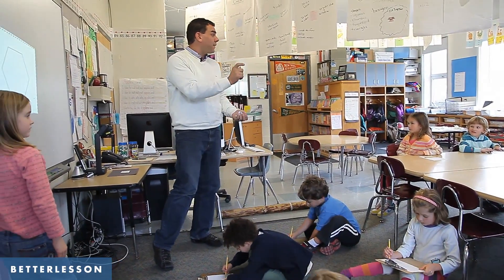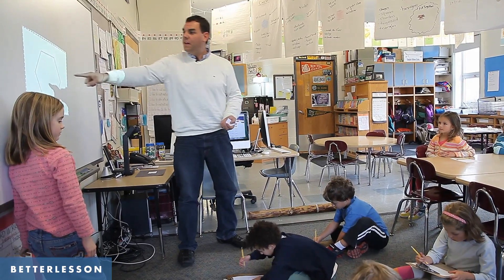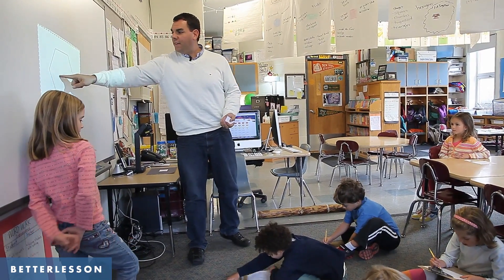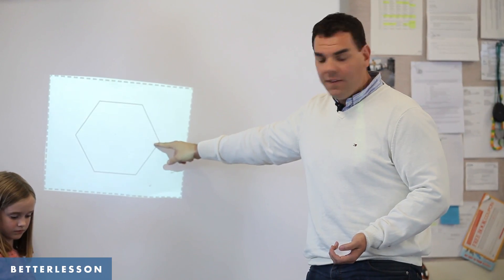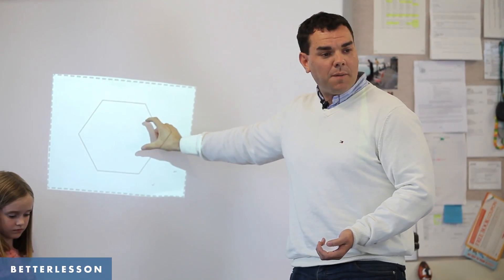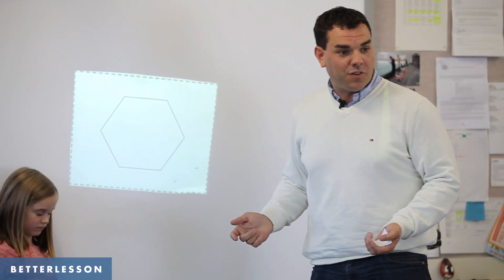I agree, trying to do six lines is really tough, but if I divide this in half like we've been working on, it makes two trapezoids and I can start with a straight line and then try it.